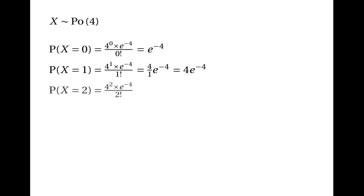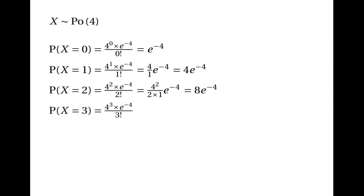The probability of having 2 events is 4 squared times e to the power of minus 4 divided by 2 factorial, which is 4 squared over 2 times 1 times e to the power of minus 4, or 8 times e to the power of minus 4. The chance of having 3 events is 4 cubed times e to the power of minus 4 over 3 factorial, which is 4 cubed over 3 times 2 times 1 times e to the power of minus 4, which turns out to be 32 over 3 times e to the power of minus 4.